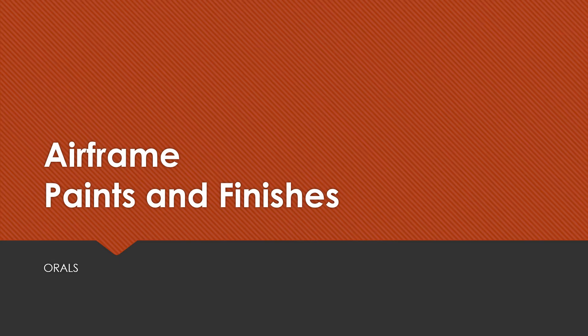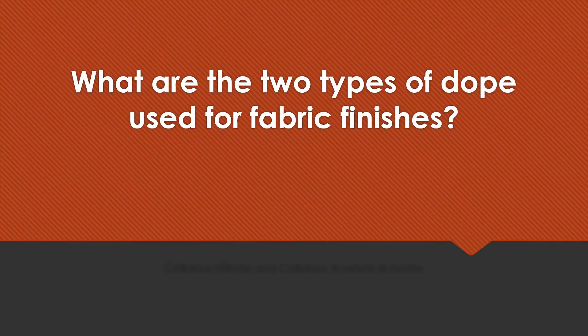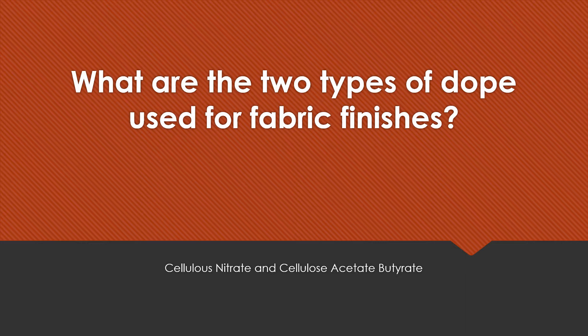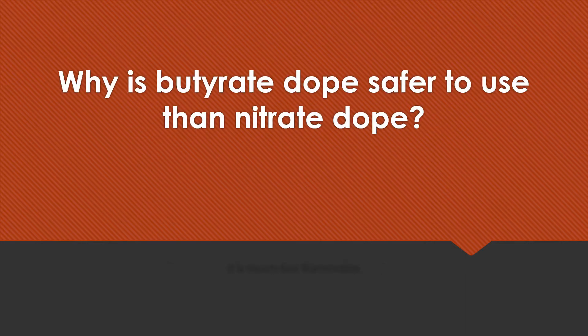Airframe paints and finishes — oral questions. What are the two types of dope used for fabric finishes? Cellulose nitrate and cellulose acetate butyrate. Why is butyrate dope safer to use than nitrate dope? It is much less flammable.